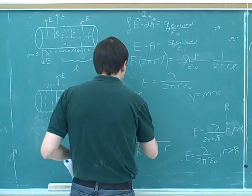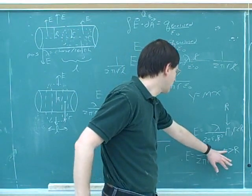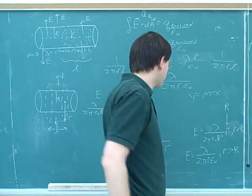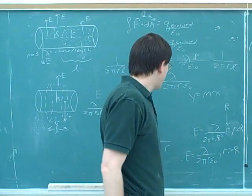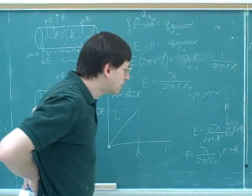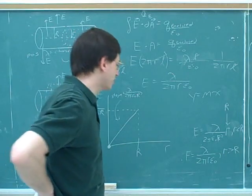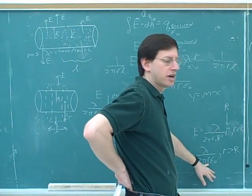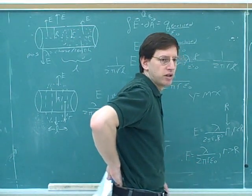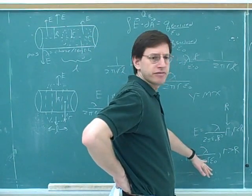All right, now we have to figure out what the rest of the graph is going to look like. Well, now, r is going to be bigger. Little r will be bigger than big R, and we're out here. All right, well, from this point on, is the electric field going to be increasing or decreasing? It's going to be decreasing. Yeah, it will be decreasing, because r is in the denominator. As r gets bigger, the fraction will get smaller.